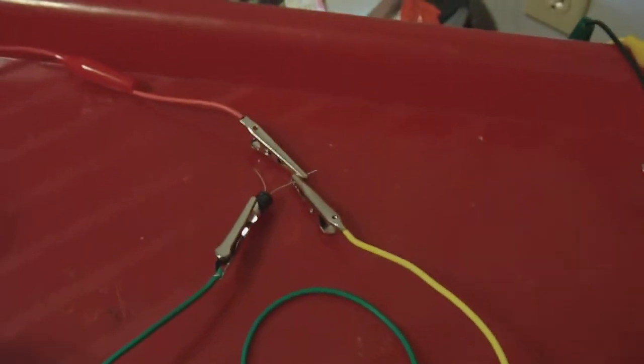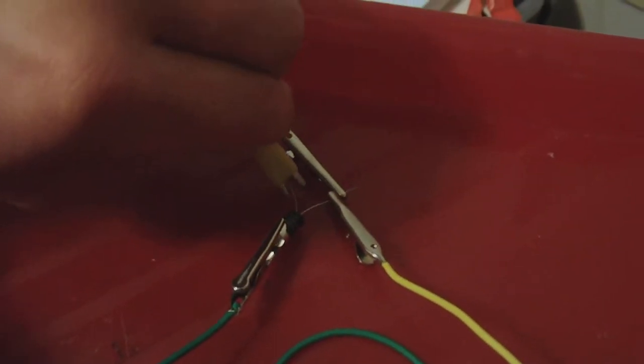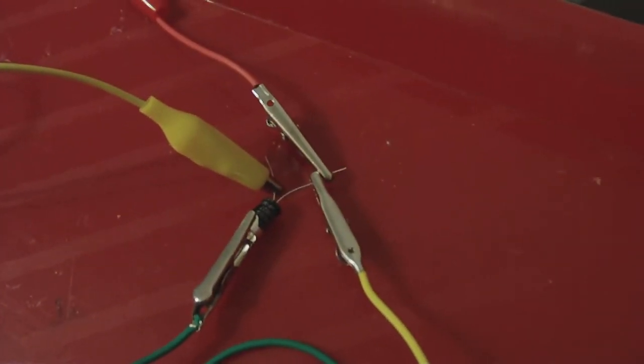Negative goes to the top, just like so. And the negative of the LED, which is this, goes to the negative capacitor. Just like so. So now it's hooked up LED captured style.